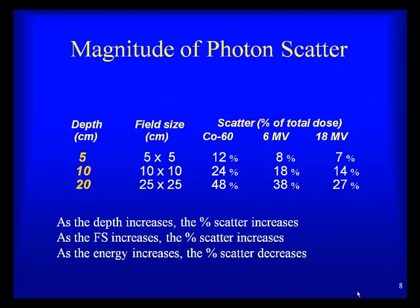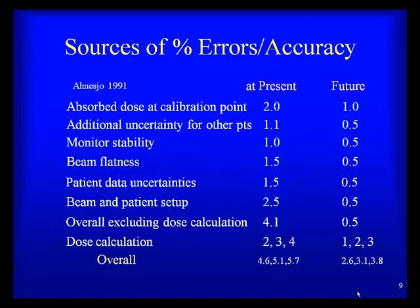As a function of depth, field size, and energy, we can see how much of the dose deposited to the central axis comes from scatter. As depth increases, the percent scatter increases. As field size increases, scatter also increases. As energy increases, the scatter contribution decreases. This emphasizes the contribution of scatter to dose and why it is important to model that correctly.